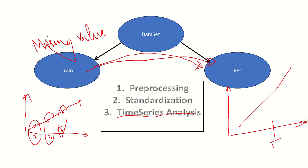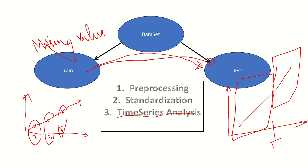For time series, we split the data by time — for a particular time period we go with training, and after that we go with testing. We split the data in this sequential pattern. If you are doing time series analysis, there is no random split of data allowed. We process the data in this way to avoid data leakage and time-related issues.